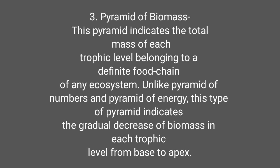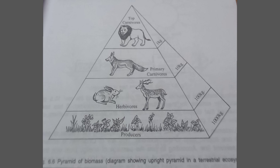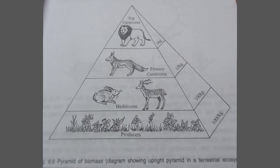The pyramid of biomass indicates the total mass of each trophic level belonging to a definite food chain of any ecosystem. Unlike pyramid of numbers and pyramid of energy, this type of pyramid indicates the gradual decrease of biomass in each trophic level from base to apex. The biomass of producers is more than consumers. This holds true for marine and freshwater ecosystems also, but in the case of parasites, the pyramid of biomass may be inverted.